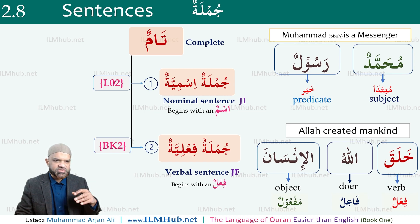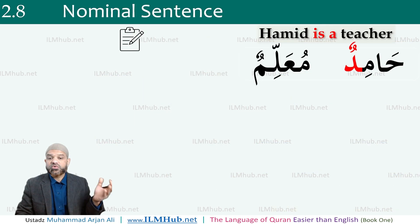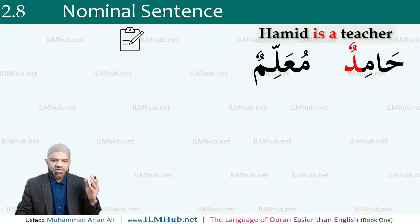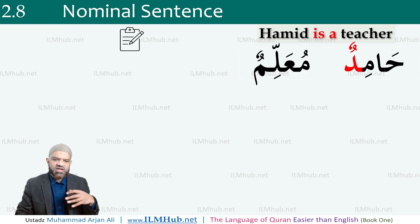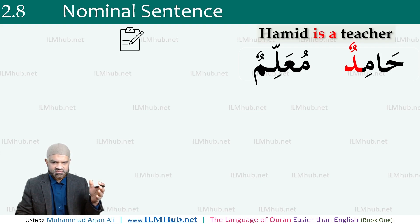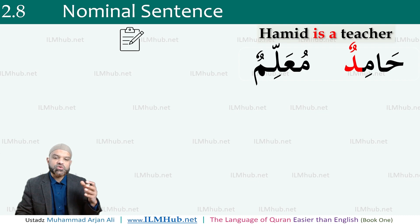We are going to look at components of jumla ismiya in some detail. What are the rules for forming jumla ismiya? The rules are very simple. Once you become familiar with the four properties of an ism, it is relatively easy. A jumla ismiya begins with an ism, and it can form sentences in Arabic with just two isms. Take the example: 'Hamid is a teacher' — you should be able to tell that both words are isms because they end with tanween.